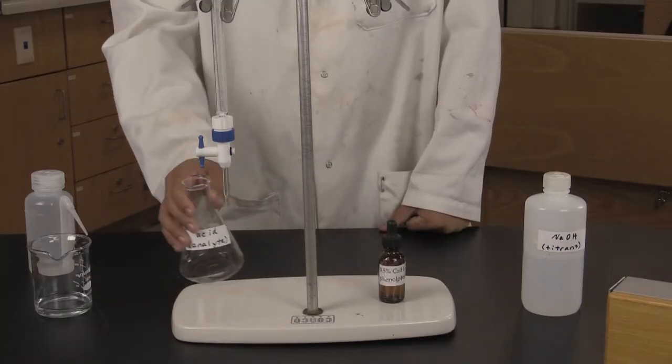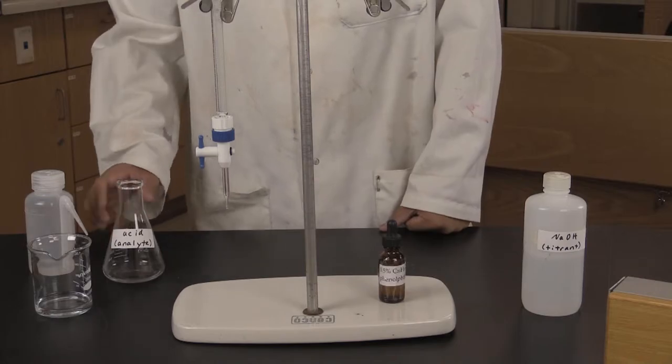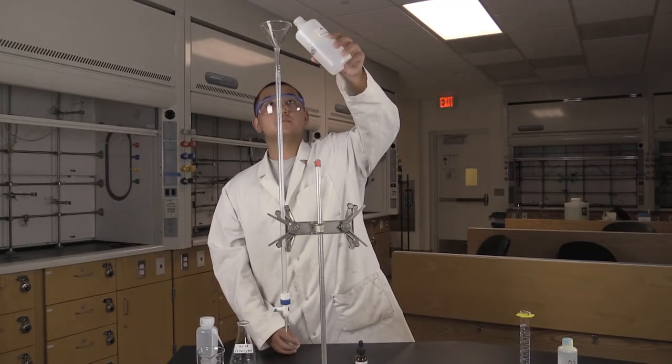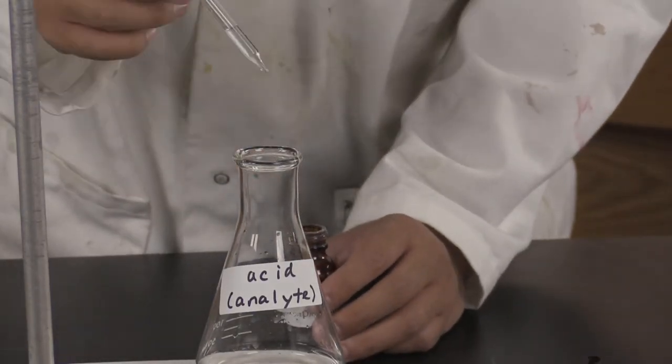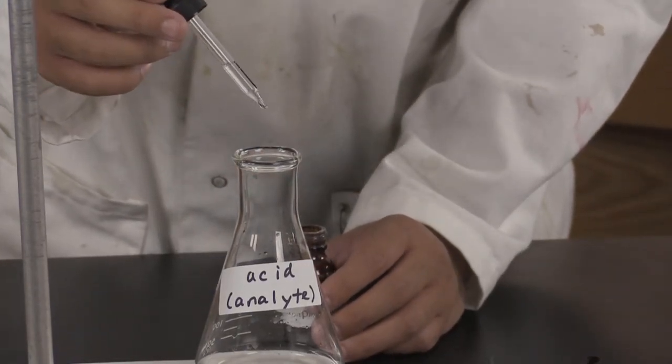Lloyd has already conditioned his burette, so he can go ahead and fill the burette with the titrant sodium hydroxide. Don't forget to add the indicator solution, or else you will titrate forever and not know where the endpoint is. The indicator solution changes color to tell us when all of the analyte hydrochloric acid has been neutralized.